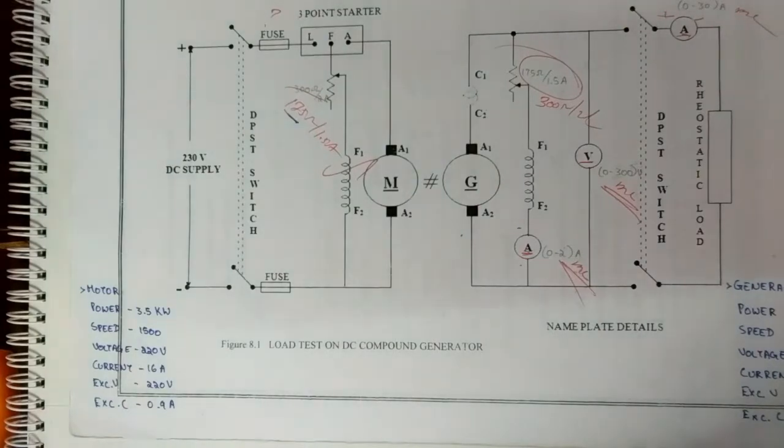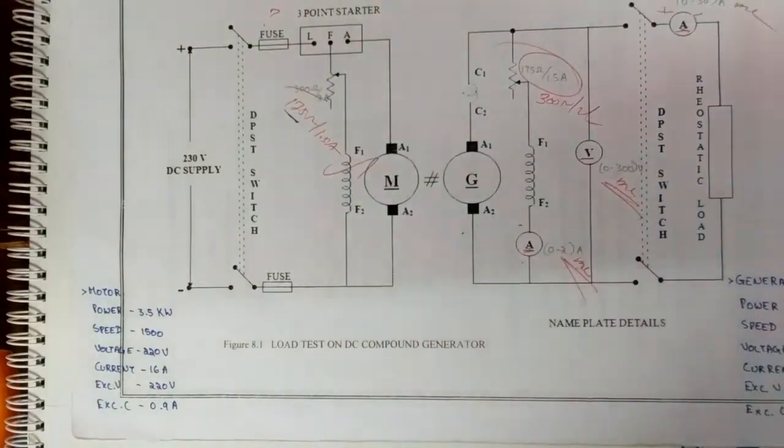Before moving to the procedure, the precautions we should take: the fuse is selected in such a way that it has 120% of the rated current of DC shunt motor. The field rheostat of the motor should be kept at maximum resistance position at the time of starting.